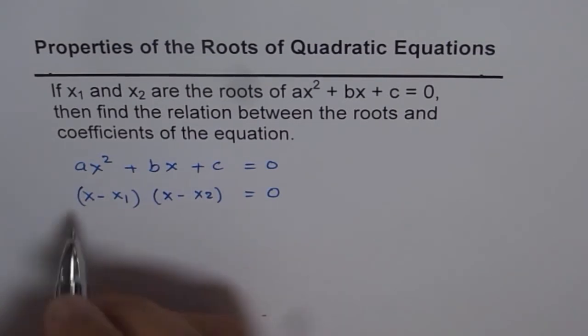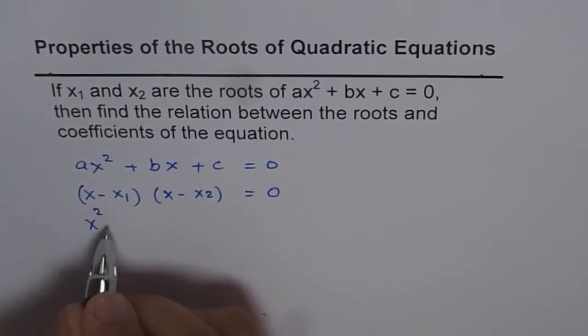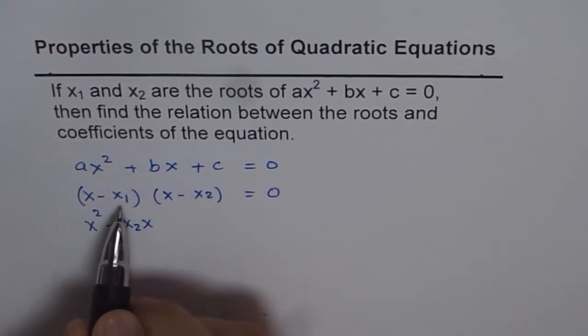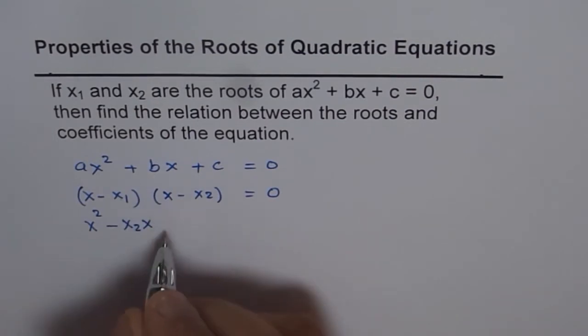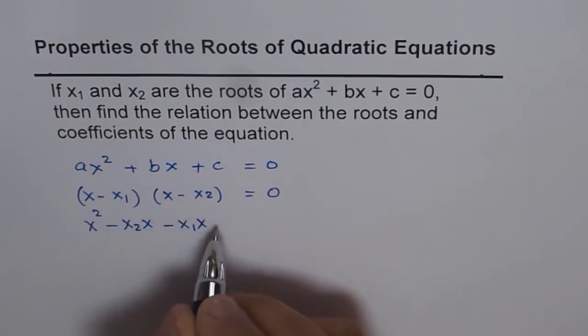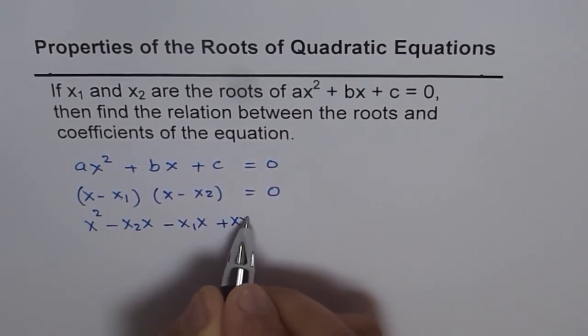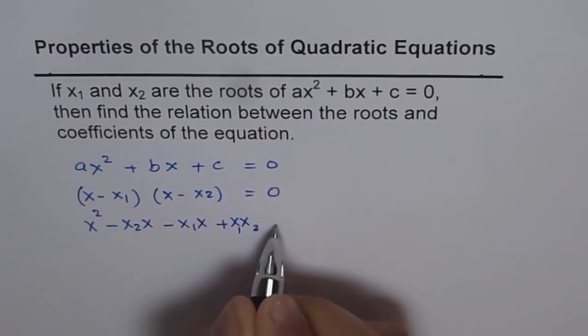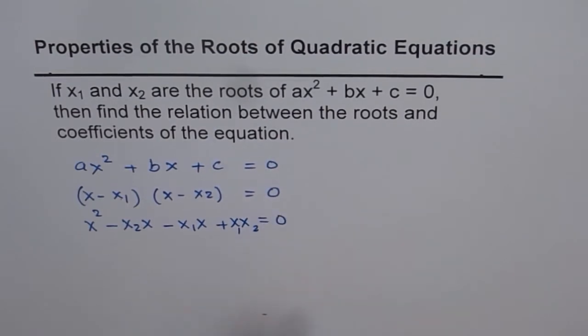x times x gives us x squared and then x times minus x2 will be minus x2x, and then we have minus x1 times x as minus x1x, and then minus and minus becomes plus and we get the product of two roots x1 and x2 equals 0.